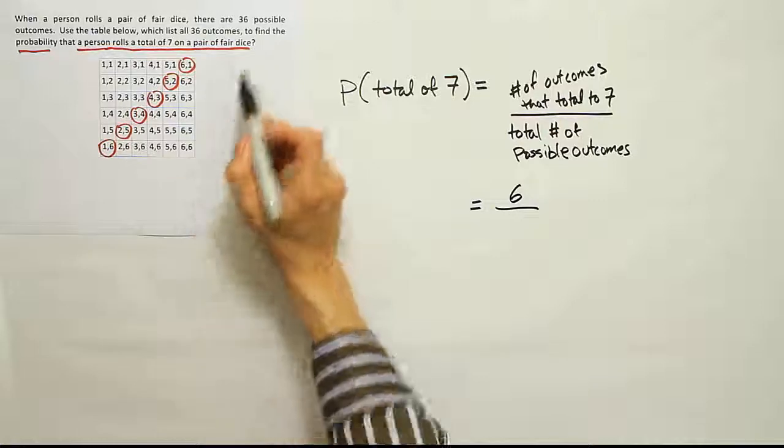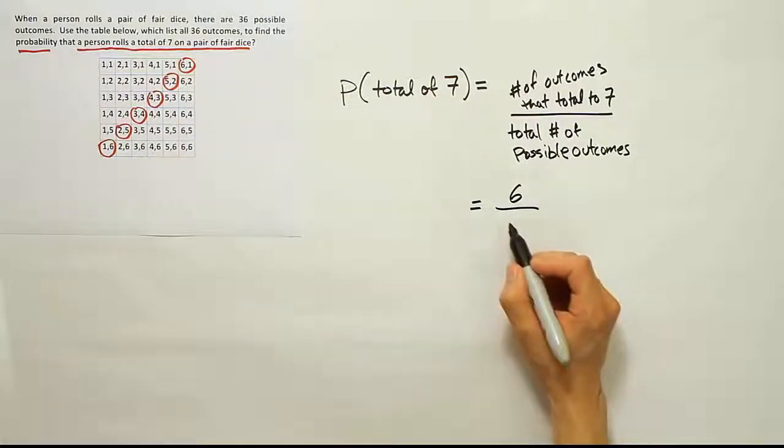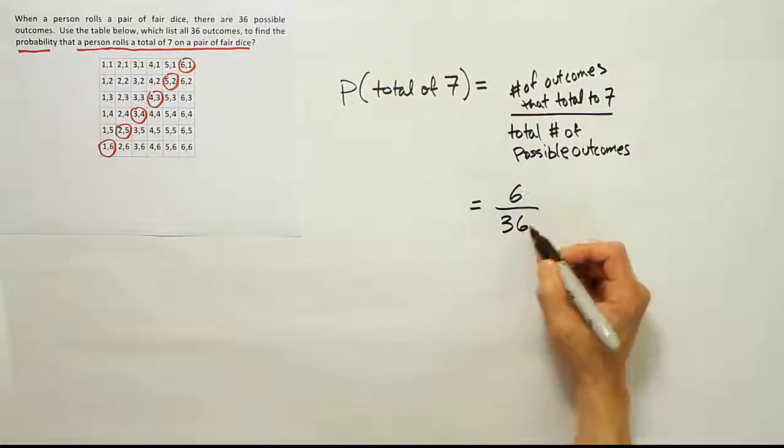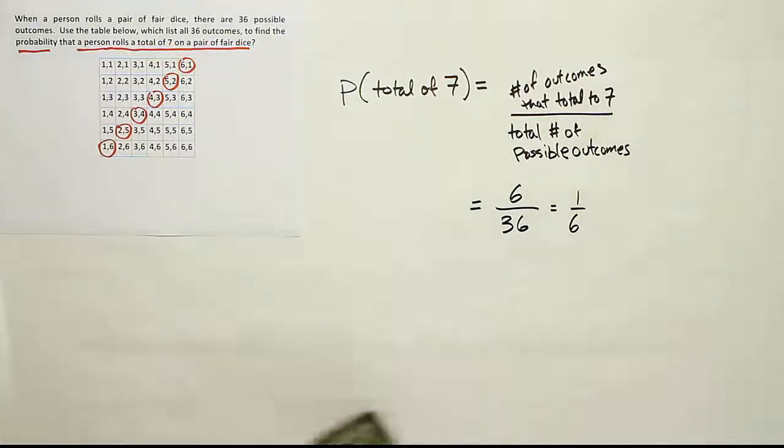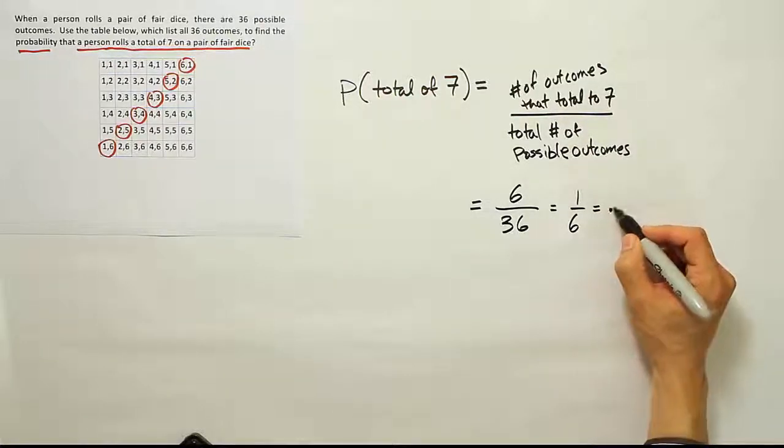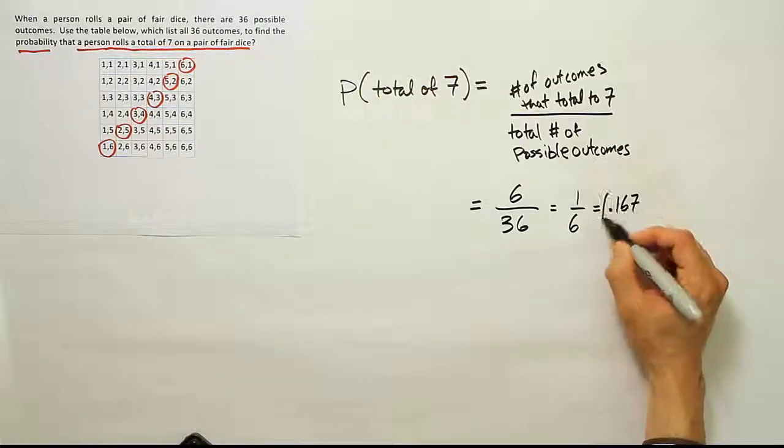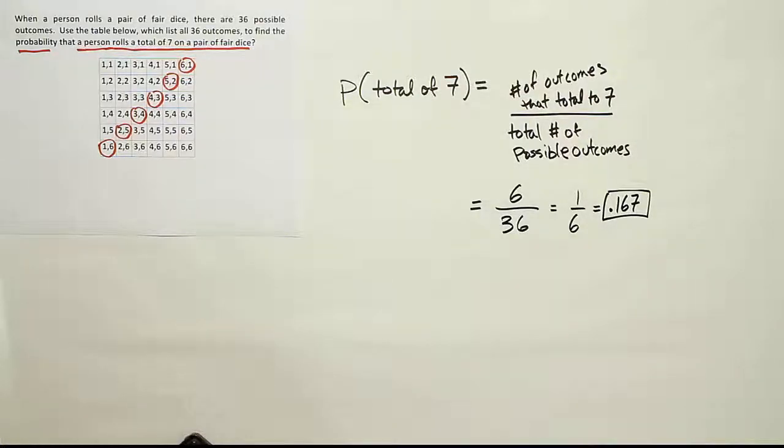There are actually 36 possible outcomes. And 6 divided by 36, of course, reduces to 1/6. And if you want to express that as a decimal, we'll end up with 1 divided by 6, which is roughly 0.167 or 16.7% chance.